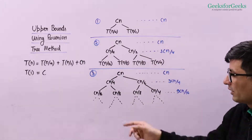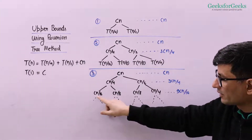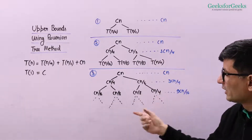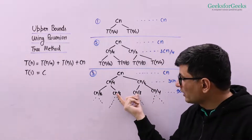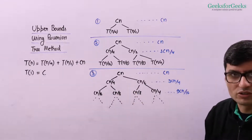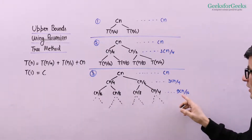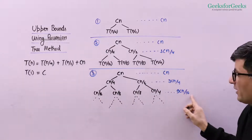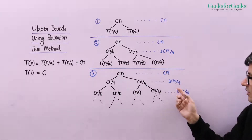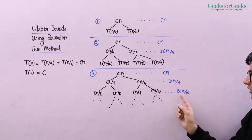Summing those terms gives 3Cn/4 at one level and Cn at the next. The four terms Cn/16 + Cn/8 + Cn/8 + Cn/4 sum to 9Cn/16. You can see a pattern now: it's a geometric progression with common ratio 3/4 — Cn, 3Cn/4, 9Cn/16, and so on.